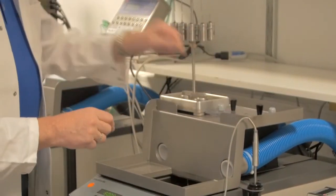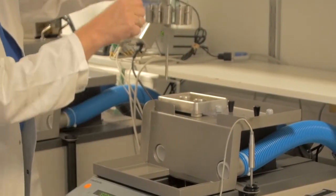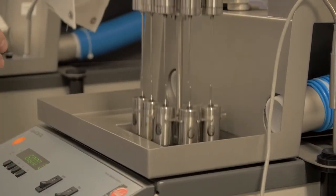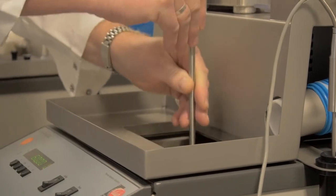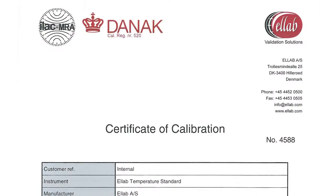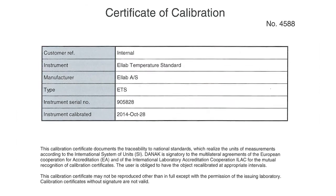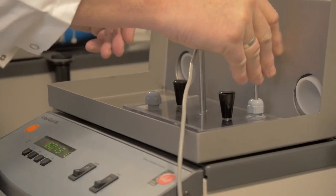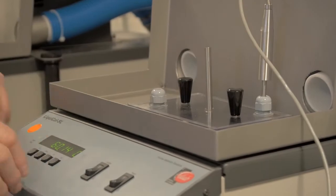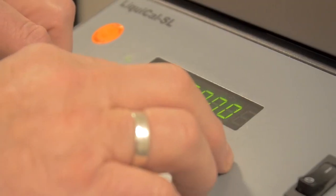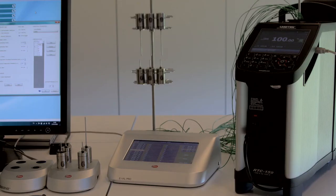Elab maintains a complete calibration laboratory for annual certifications and service. This laboratory is accredited according to ISO 17025 for temperature, pressure and humidity. Elab is determined to offer easy and available calibration services within reach by satellite laboratories.